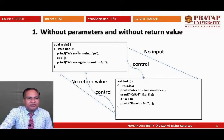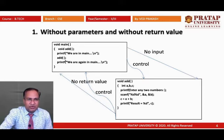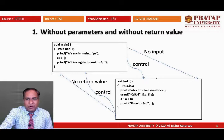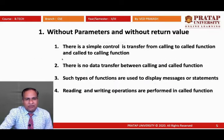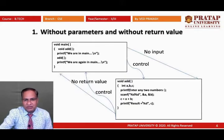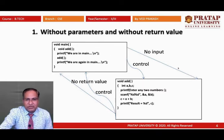For example, we define a function named 'add' whose return type is void, meaning no return type, and parameters are blank. When we call this function, there is no parameter passed, so no data input is given to the called function. When control transfers from the calling function to the called function, there is no data transmitted because the parameters are blank.